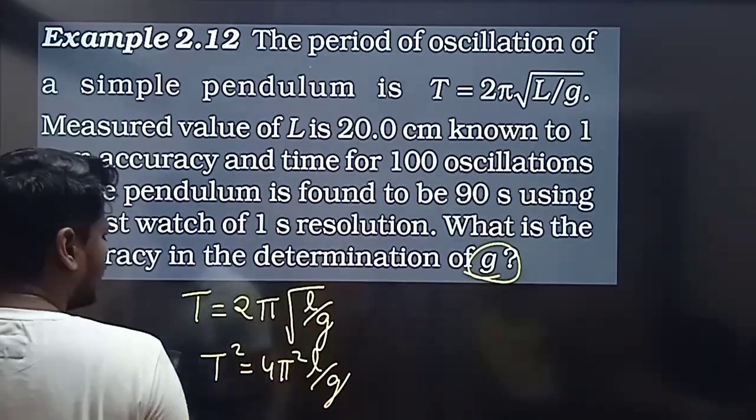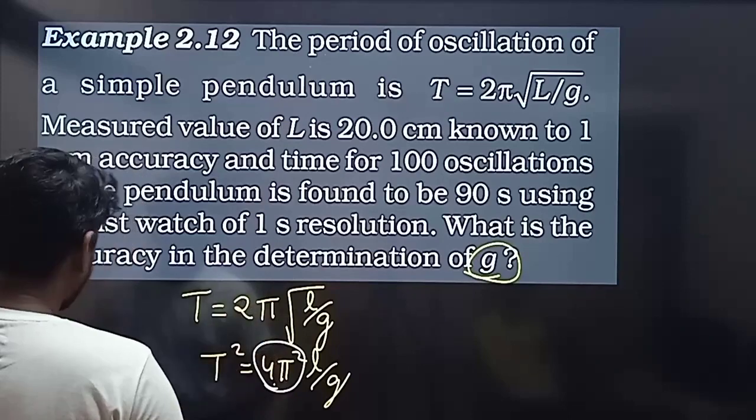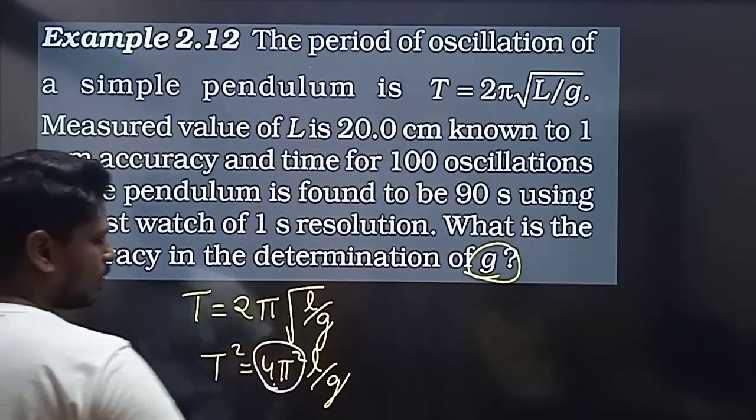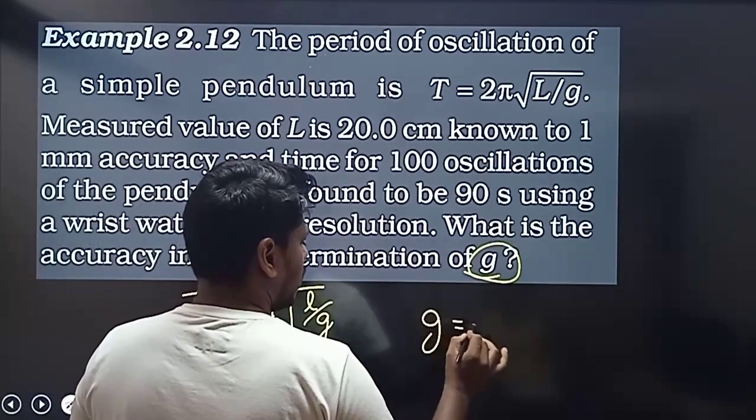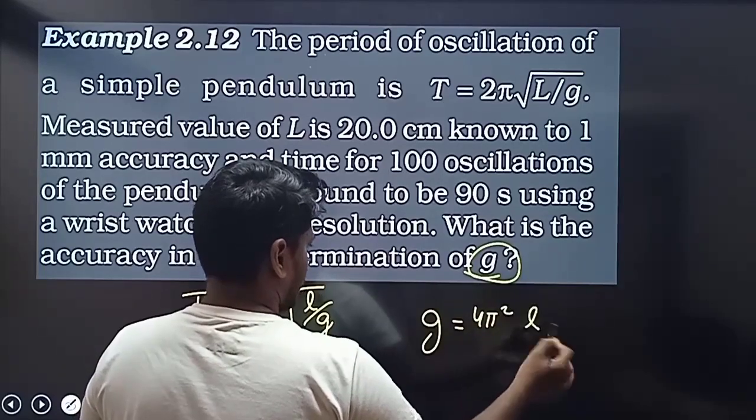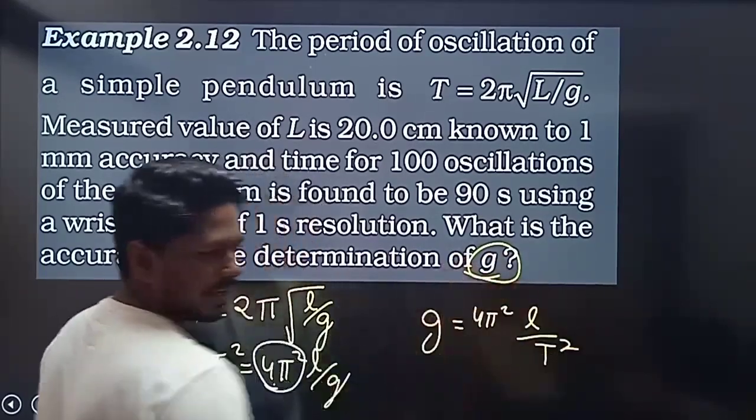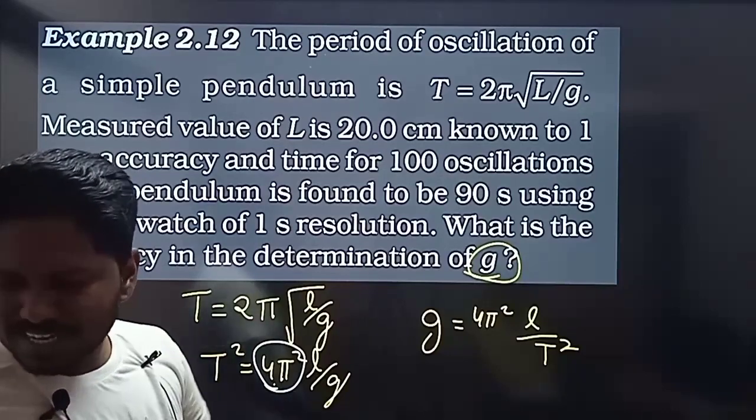So g equals 4π² L by T squared. Correct. Now we need to find the error.